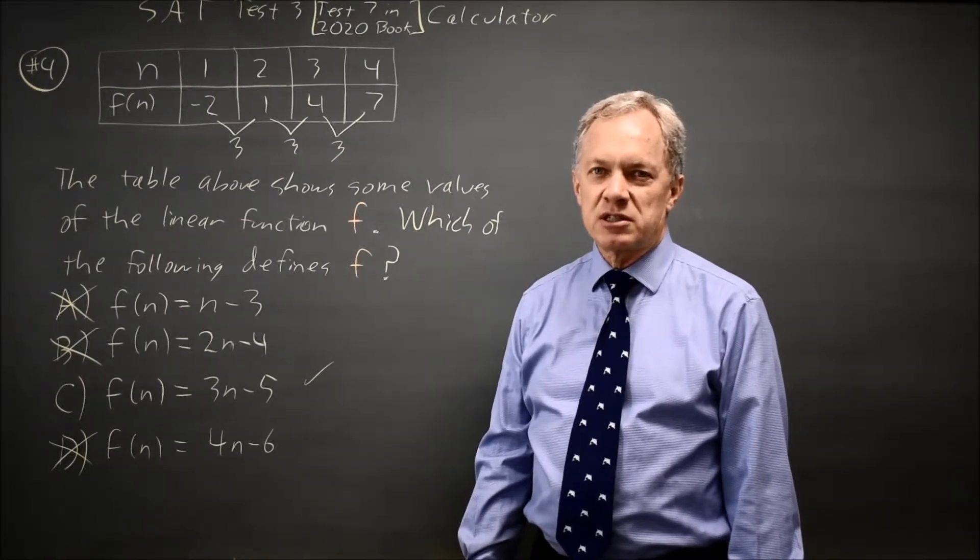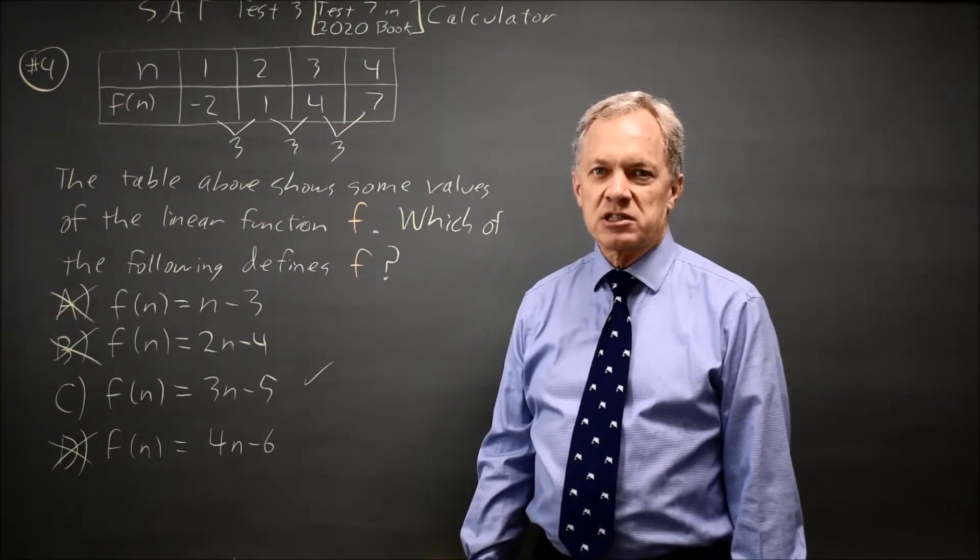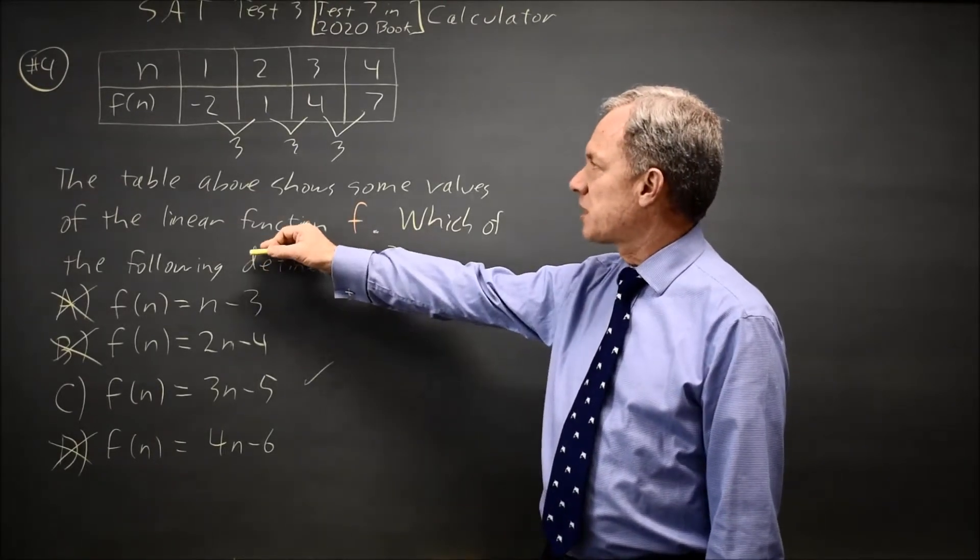7 minus 4 is 3. Each time n goes up by 1, the difference in y values is 3. So our first differences are constant, which tells us it's linear, but we already knew that.